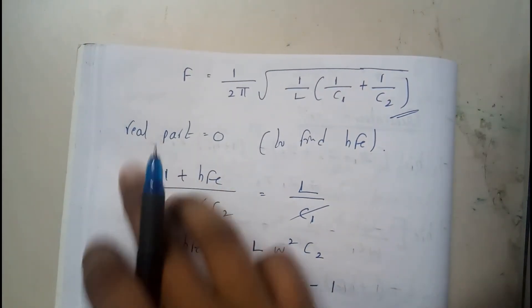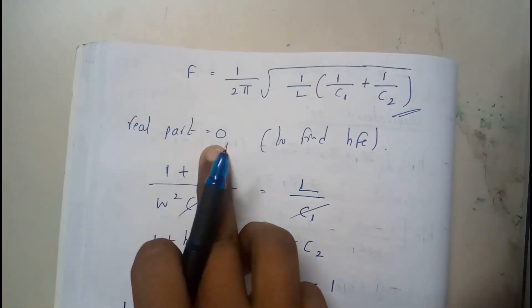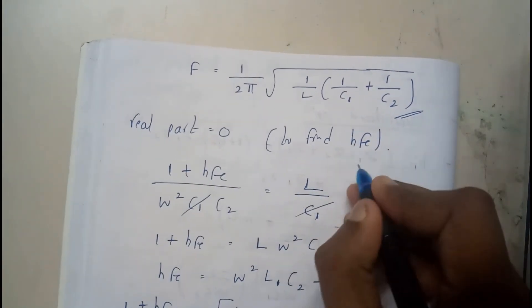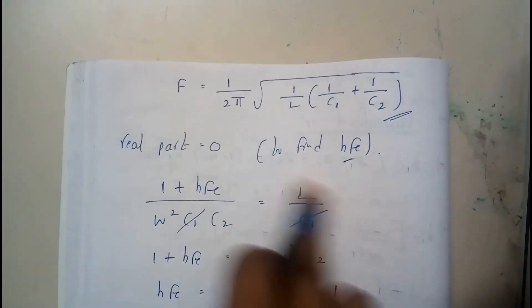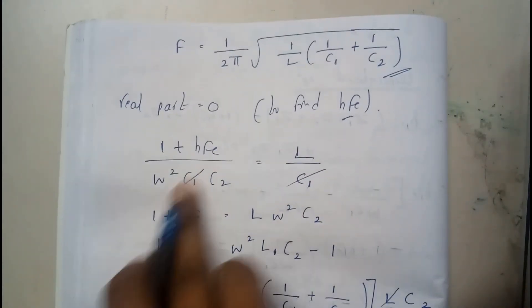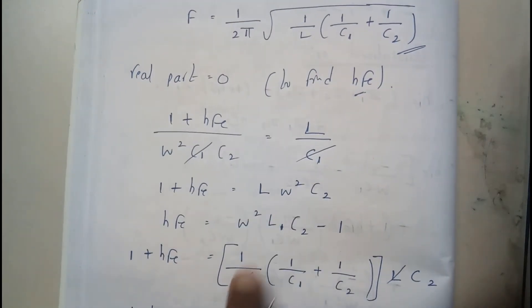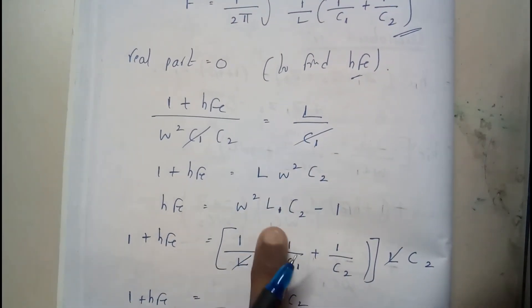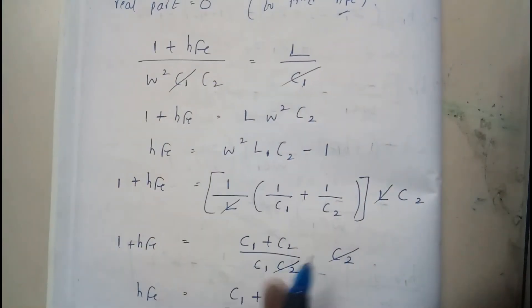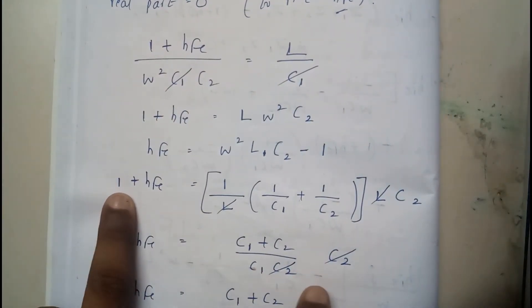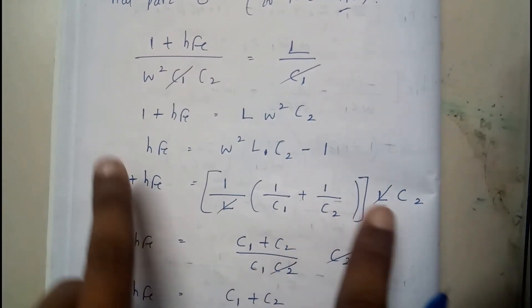So further moving on, we can directly say that real part is equal to 0 now to find HFE. So the equation should have HFE if you observe it's here. So C1, C1 cancel, send this that side. So we already have the value of W square. So we will be substituting the value of W square. So again we tried to make it in terms of plus 1. So we have just cancelled them.